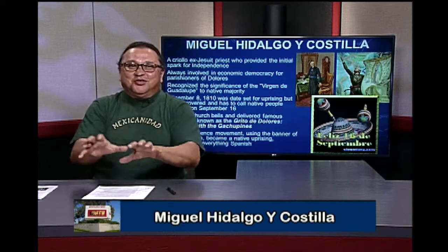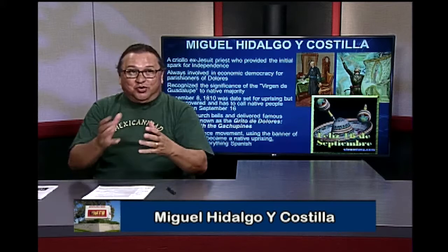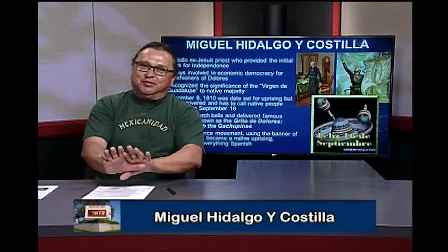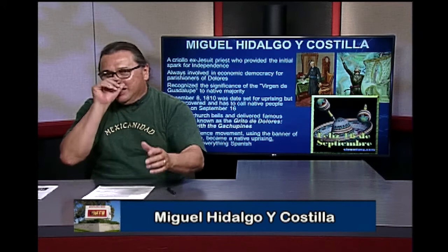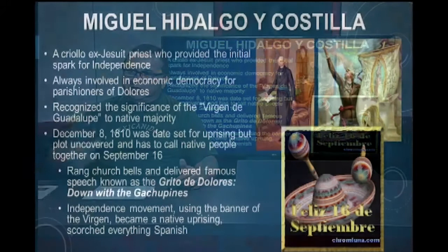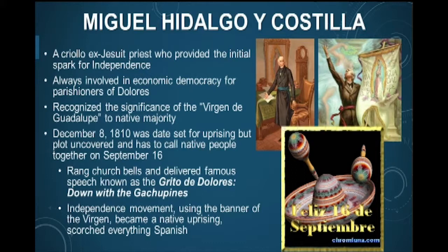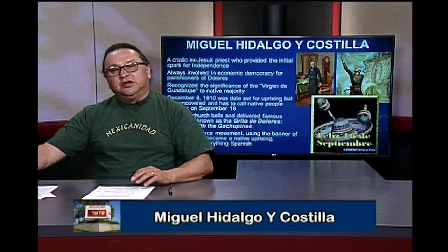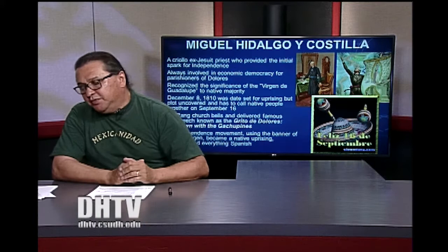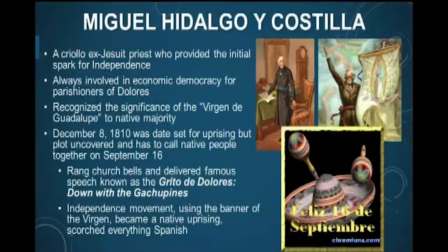The native peoples scorch everything Spanish — cattle, horses, chickens, churches, chalices — everything. The only thing they leave up are native traditions. This is exactly what alarmed the Criollos, who had the arms that Miguel Hidalgo was trying to secure. Hidalgo tried to tell them: they're frustrated — that's 300 years of frustration being let out. We need them to overthrow the Spanish. He's going to use the banner of the Virgen de Guadalupe throughout the movement.